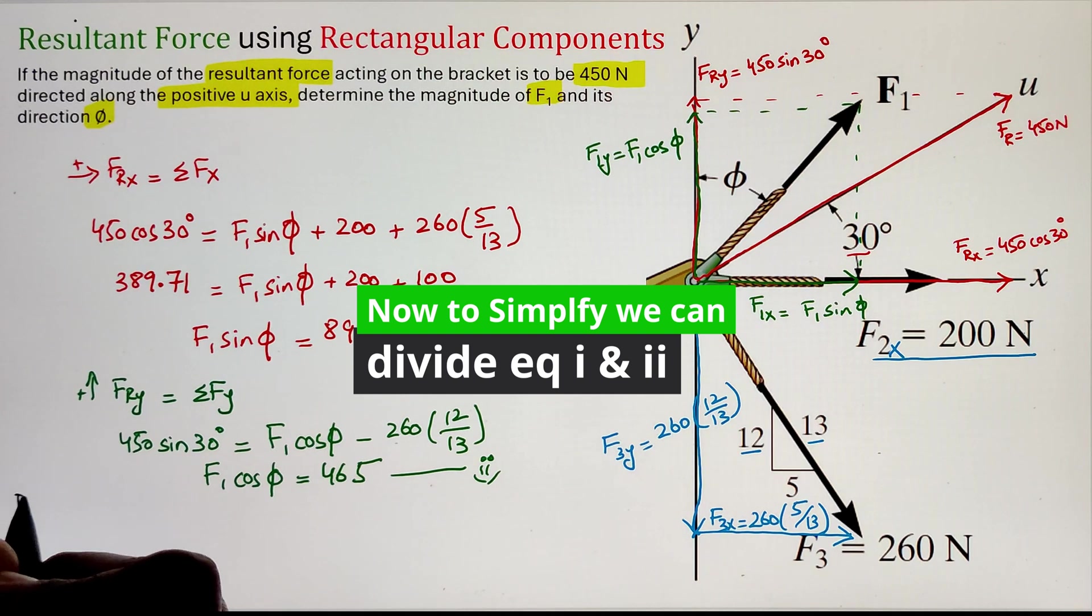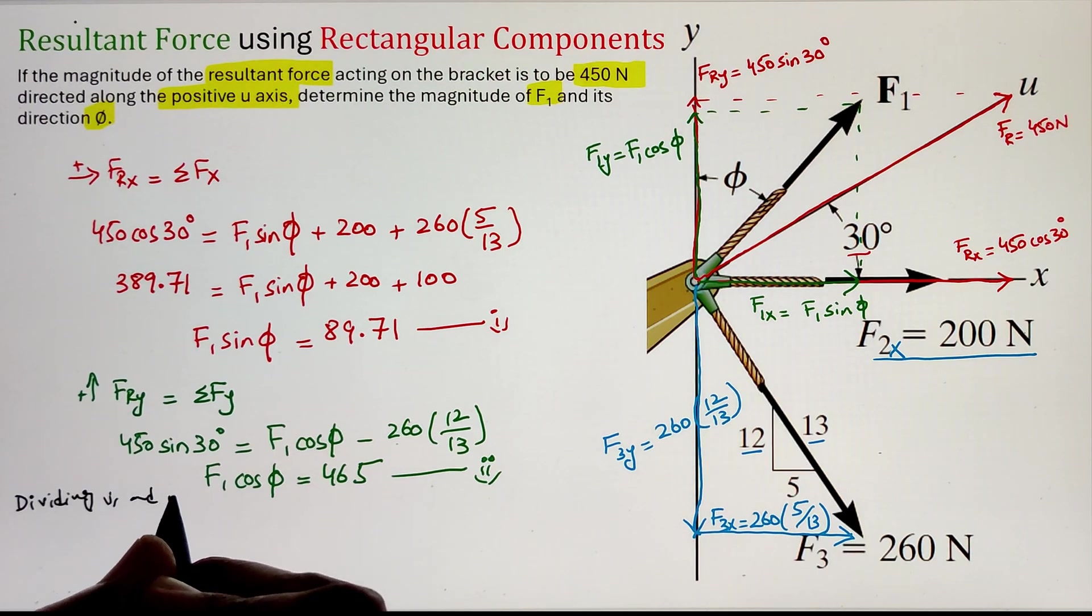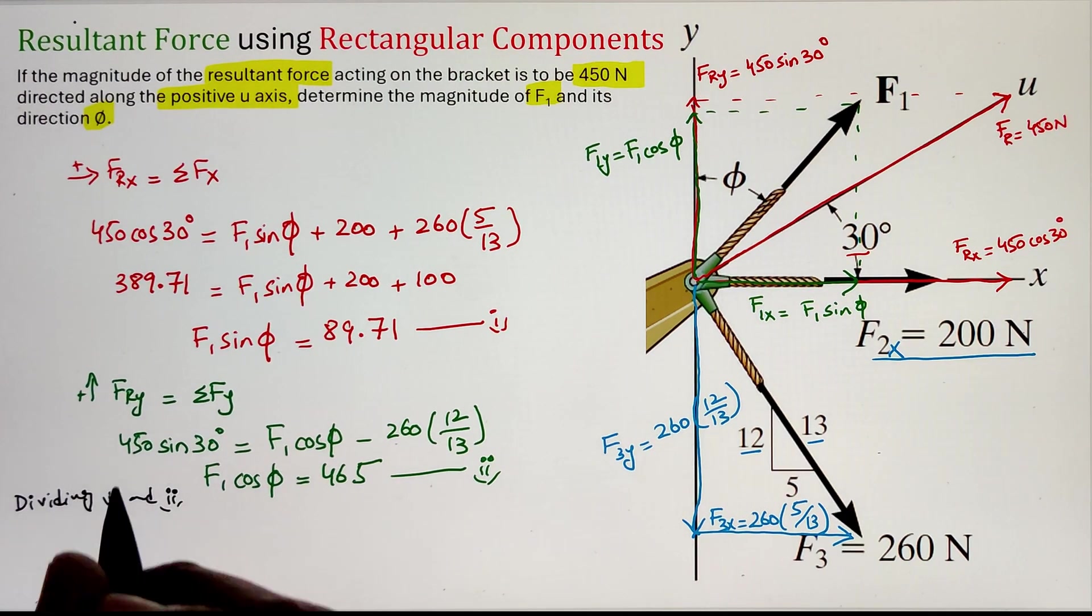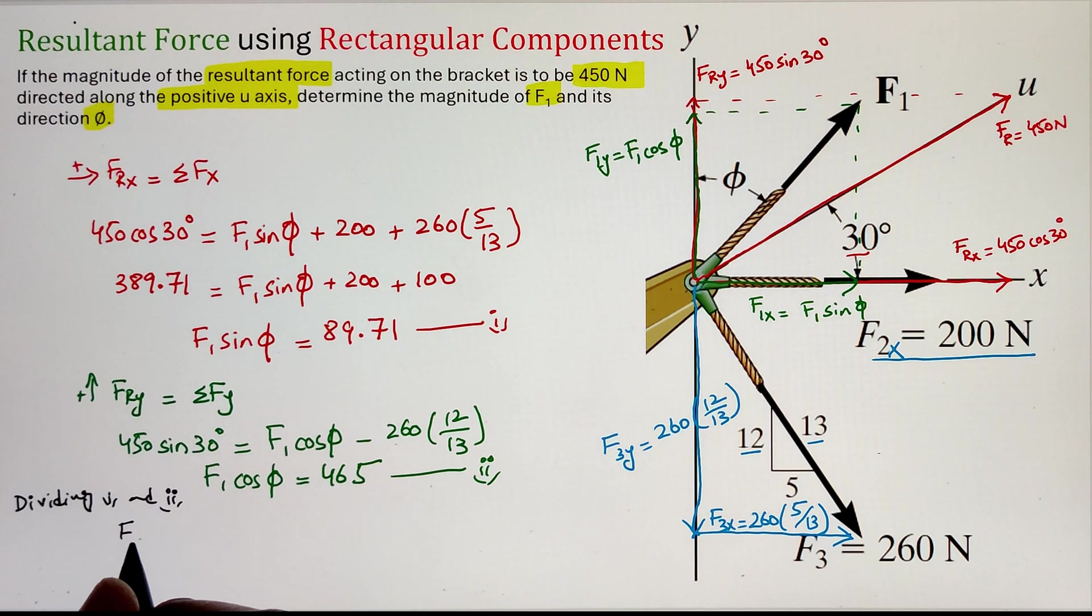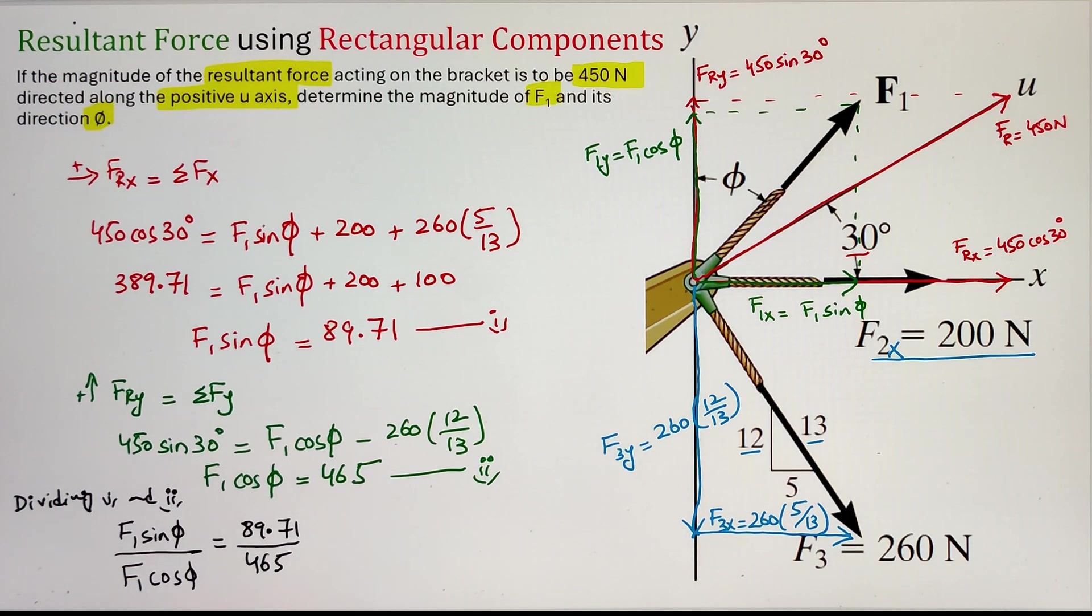Now, once we have both equations figured out, we have two equations and two unknowns, so we can go ahead and easily simplify this. One way of doing that is dividing equation 1 with equation 2. If we do that, our force F1 will cancel out and we have sine phi over cosine phi on one side of the equation, whereas on the other side we have a ratio of 89.71 and 465.